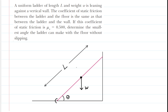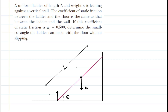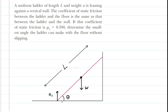Now we head over to where the ladder is contacting the ground. Since the ladder is pressing against the ground, the ground in response will press up on the ladder. This is a normal force which we will identify as N1. In addition there is static friction — the ladder is trying to slide to the left and in response the friction is preventing that motion, pointing to the right, and we call that force F1.